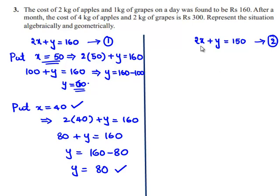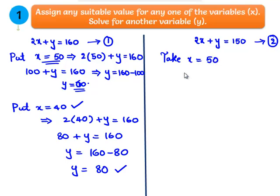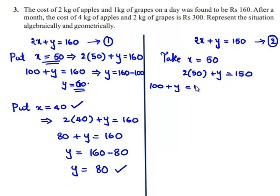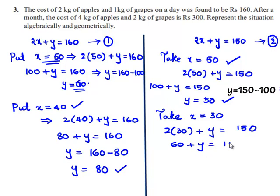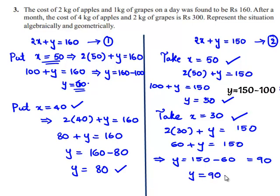Coming to the second equation, which is 2x + y = 150. Take x = 50: 2 times 50 plus y = 150, we get 100 + y = 150, so y = 50. If x = 50, the value of y is 50. Now take x = 30: 2 times 30 plus y = 150, so 60 + y = 150, giving y = 90. Therefore, if x = 30, the value of y is 90.